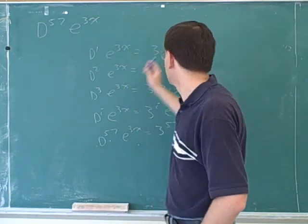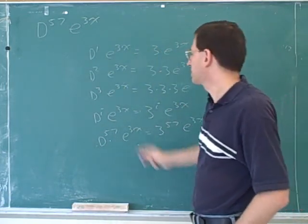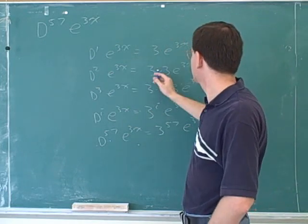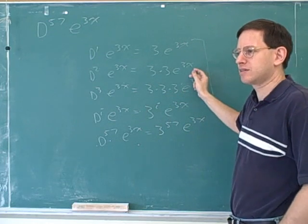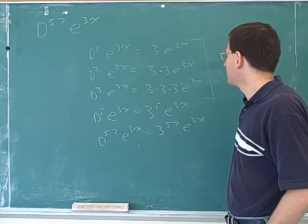Well, the first derivative of this function would be 3 times e to the 3x. The second derivative would be this times 3 again. The third derivative would be this. So do these steps make sense? Do you see where I got these? Well, now, notice what the pattern is.